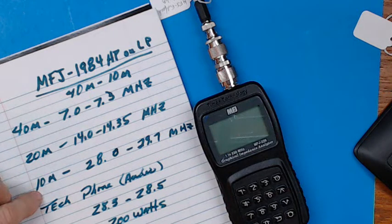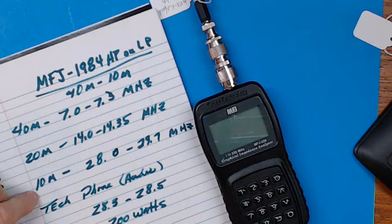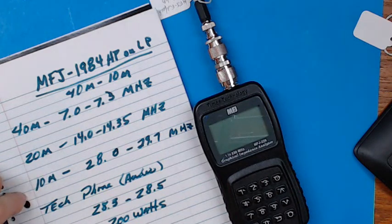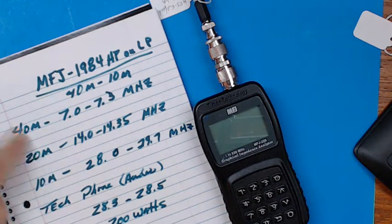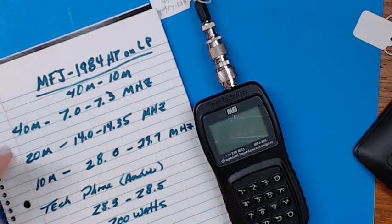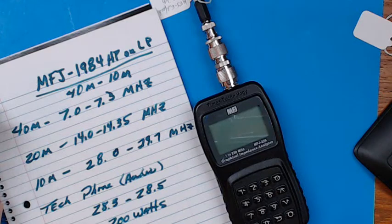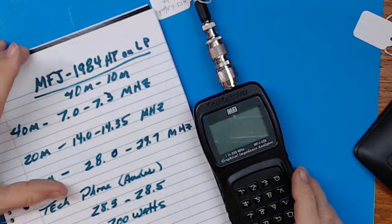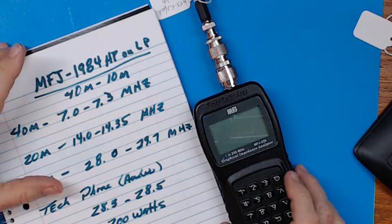10 meters is not very active, so I don't expect to get much there. It's one of those things where conditions have to be just right for it to be active. I'll be listening for a while and keep checking 10. When 10 comes in, I'll try to do some communications, which is what I want to do. Let's see what this antenna does using my MFJ-226 analyzer.